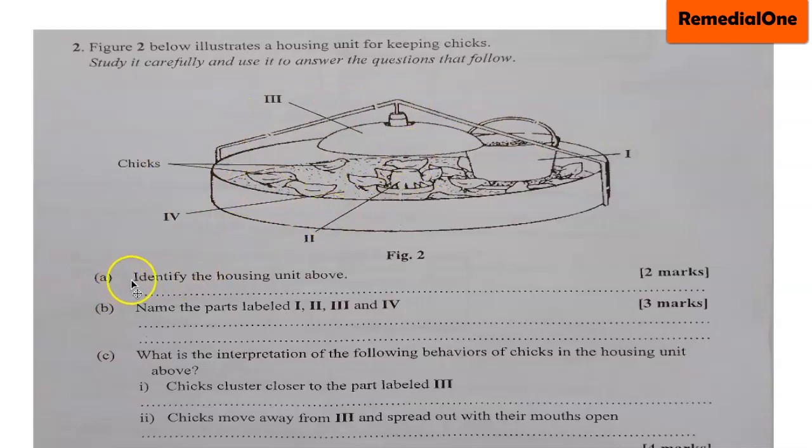Question A: Identify the housing unit above. Question B: Name the parts labeled I, II, III, and IV. So we are supposed to label these parts: I, II, III, and IV.